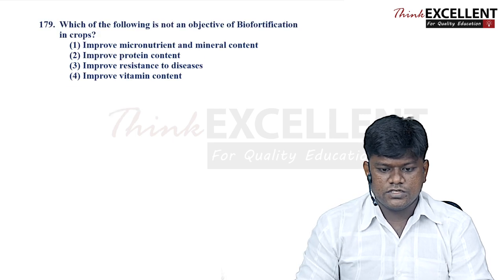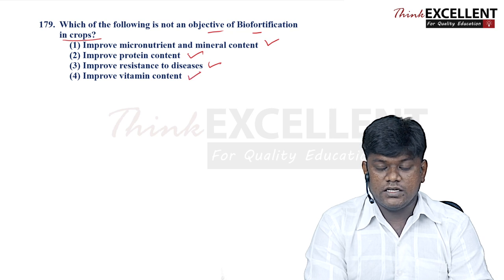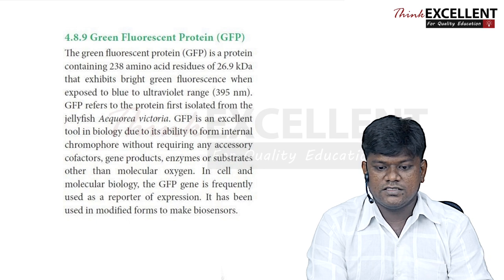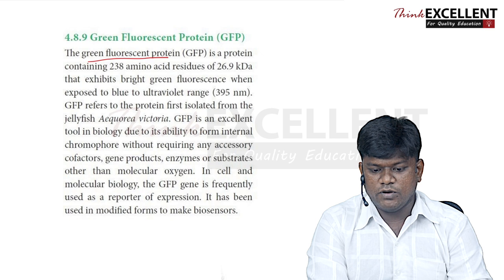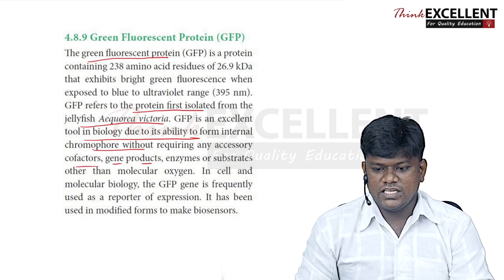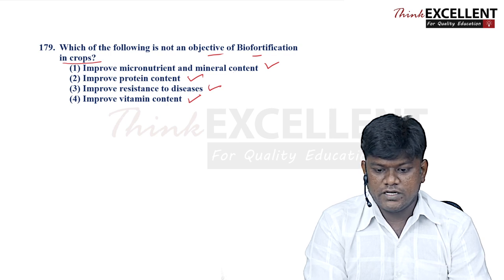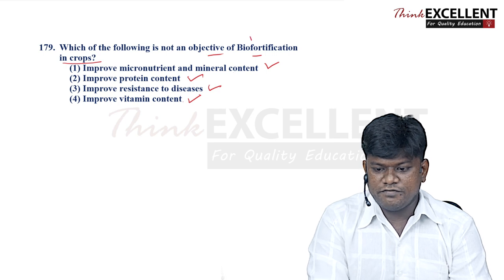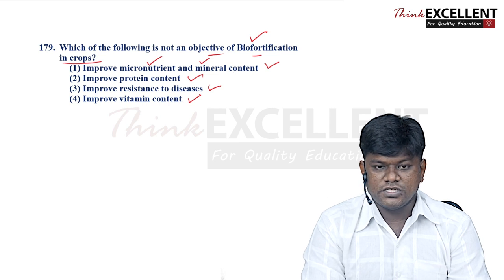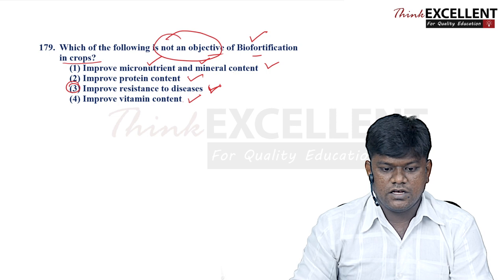Question 179: which of the following is NOT an objective of biofortification in crops? Options are improved micronutrient and mineral content, improved protein content, improved disease resistance, and improved vitamin content. Biofortification aims to improve micronutrient, protein, and vitamin content. Improved disease resistance is not an objective of biofortification. Option 3 is the right answer.